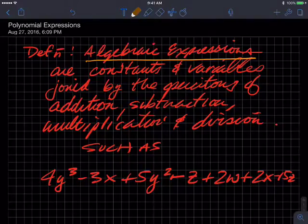An algebraic expression is, or are constants and variables joined by the operations of addition, subtraction, multiplication, and division. And I should never write in cursive again because I can barely read my own. So I'll read it again. Algebraic expressions are constants and variables joined by the operations of addition, subtraction, multiplication, and division, such as this guy.